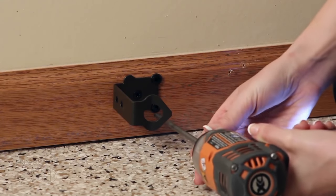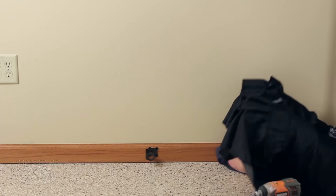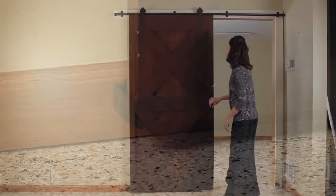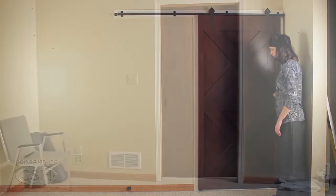Align the other door stop and fasten to the trim using the same method as the other door stop. This completes the installation of the QuietGlide rolling barn door hardware.